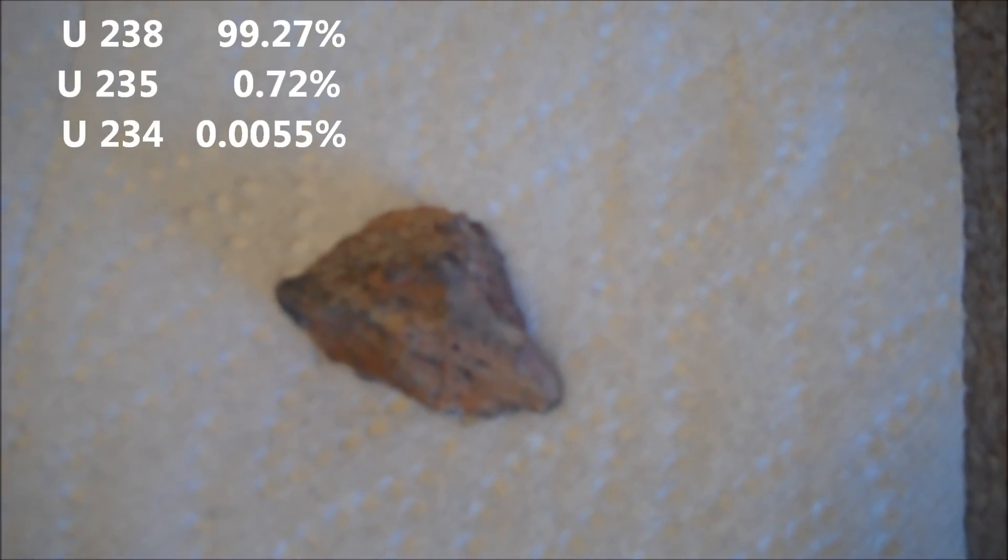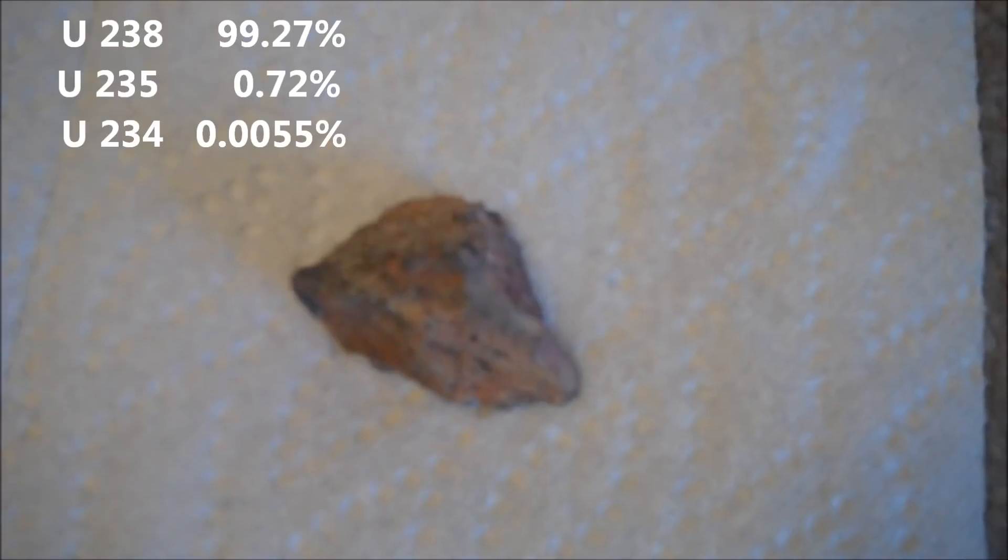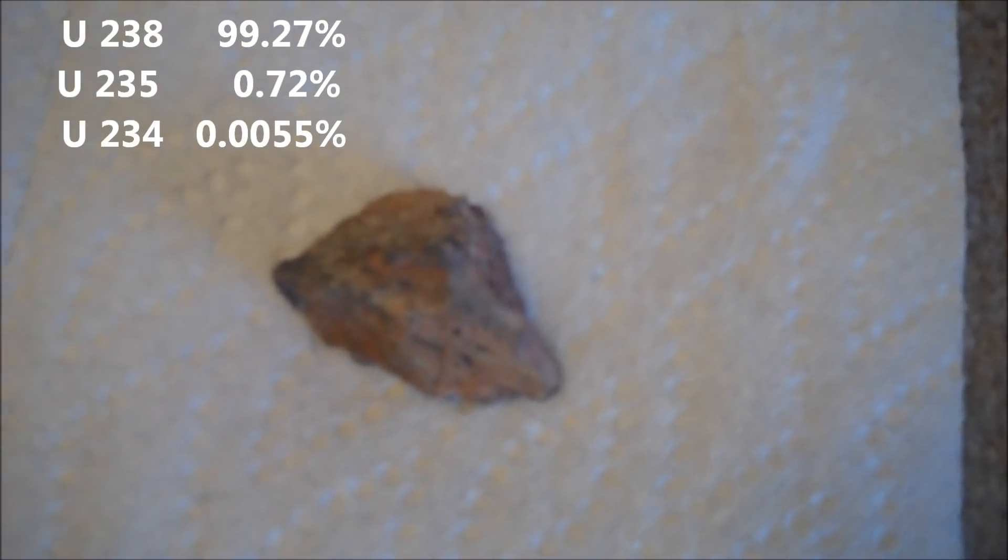The percentages are very skewed. Uranium 238 comprises 99 plus percent of the natural uranium. Uranium 235 makes up just seven tenths of one percent. And Uranium 234 exists in only 55 one-thousandths of one percent.